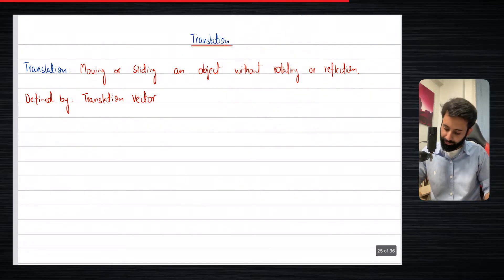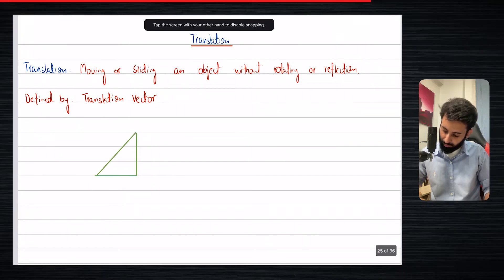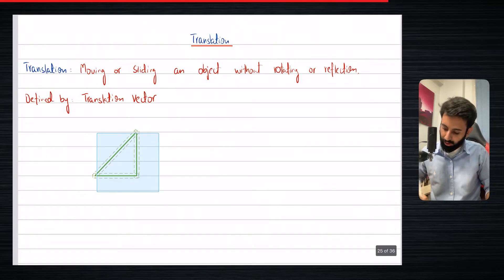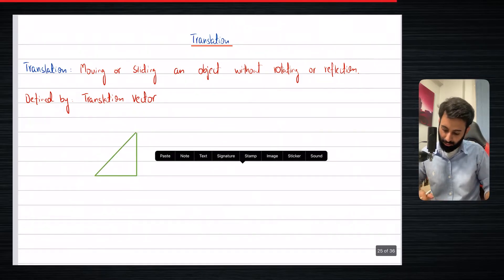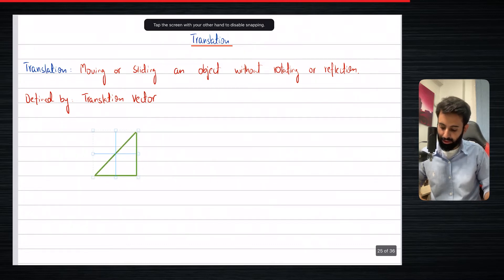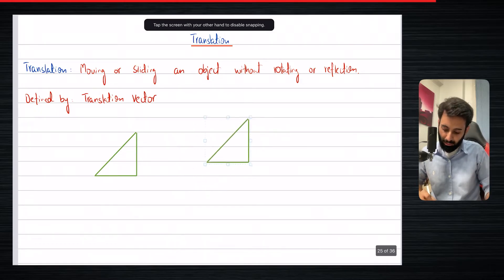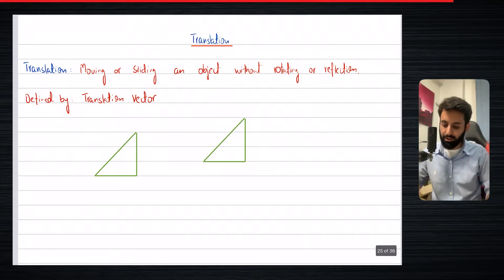For example, if you have an object — let's say a triangle over here — and I copy and paste it here, this is the object. If I want to translate it, translating means moving it horizontally and vertically. How many units we move horizontally or vertically is defined by the translation matrix.